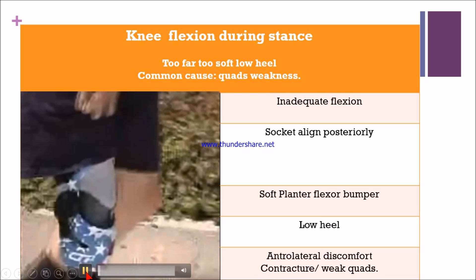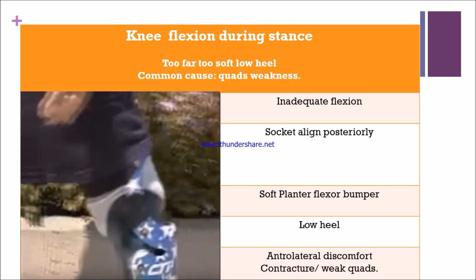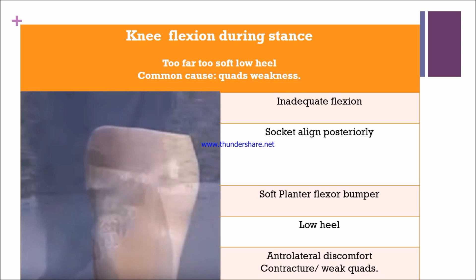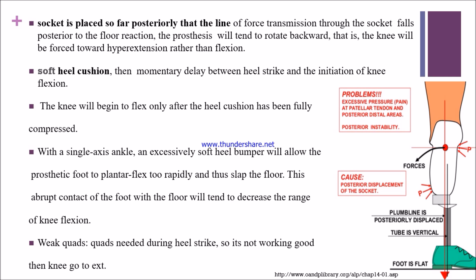In this diagram we can see inadequate knee flexion because the socket is aligned too far posteriorly. When the socket is placed too far posteriorly, there is excessive pain and pressure at the patellar tendon area and the posterior distal areas.